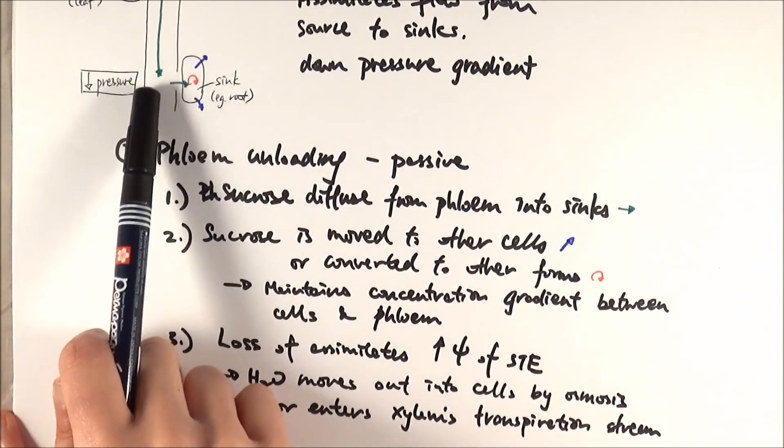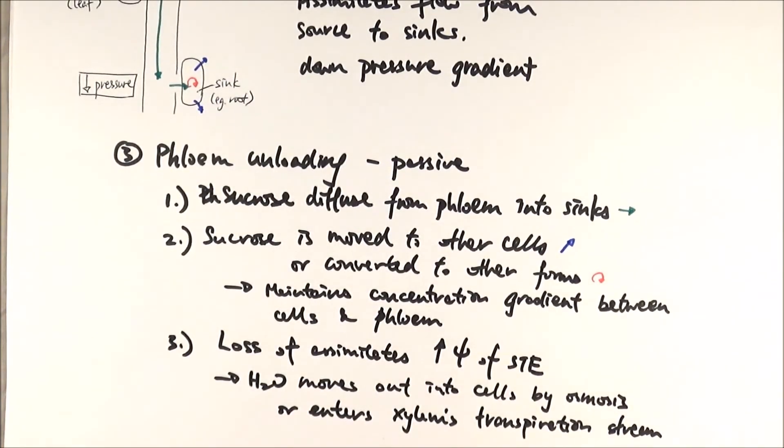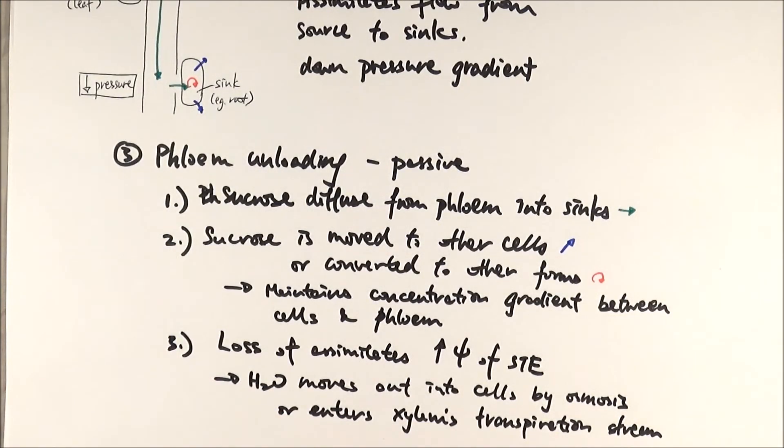Because of a loss of assimilates in here, you are increasing the water potential, therefore the water then also moves into the sink following the sugar. Or it can then enter the adjacent xylem for the transpiration stream, moving water to somewhere else.